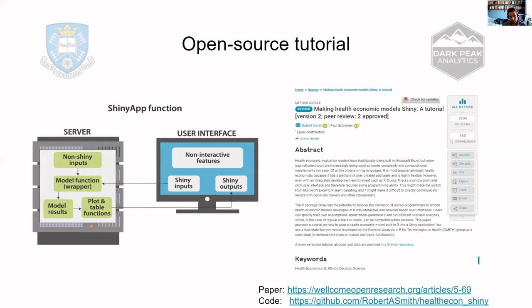So with that in mind, the contribution that Paul and I felt we could make to this push and drive towards the use of R in HTA is making a simple reproducible example of how to wrap up a Markov model — created by a team called DARTH over in the Netherlands but with academics all over the world — into a simple Shiny app. The idea is that this would be an incredibly simple example that anybody could follow and then go on from there to wrap up their own models written in R into Shiny apps, and then continue to build those Shiny apps into more and more sophisticated applications.